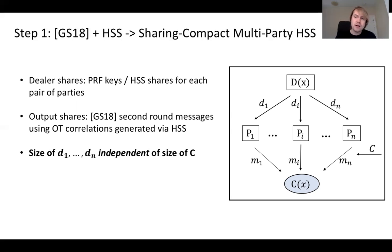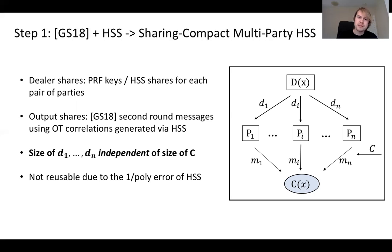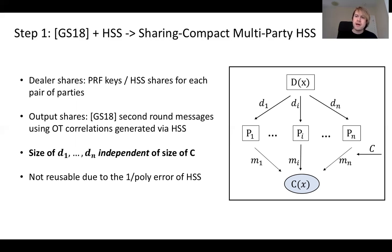You might think the dealer messages are already reusable for many circuits in the second round, but it turns out this is not true. The problem stems from the fact that HSS reconstruction is not negligibly correct — there's inverse polynomial error — and that error translates into a security issue. The result is a primitive that only allows simulation for a single second round computation.